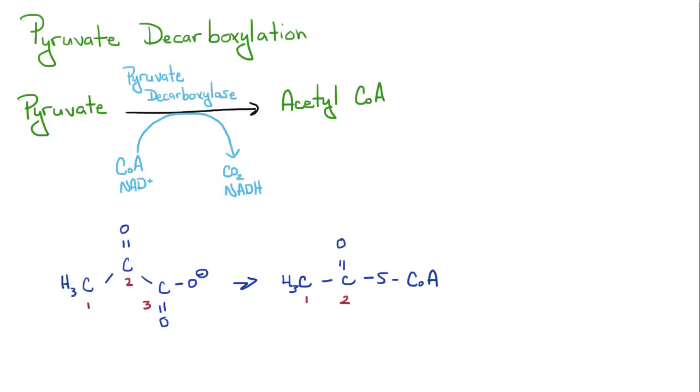So before you actually enter this cycle, you have to take pyruvate from glycolysis and you have to break it down into a molecule called acetyl coenzyme A. This is done by the enzyme pyruvate decarboxylase. So you've got your pyruvate right here, a three-carbon molecule. You're going to have your coenzyme A come in and also some NAD, the oxidized form.